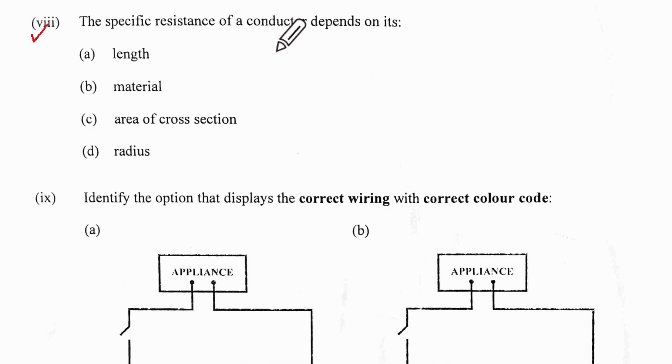The specific resistance of the conductor depends upon its material, not length, not area of cross-section. These two are interdependent, so the correct option is material.